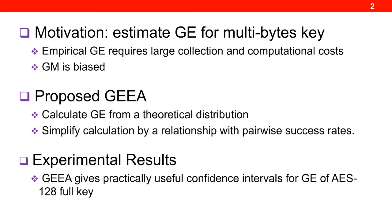Then we explain our new GEA estimator. This estimator is based on the theoretical distribution of score vectors, and we simplify the calculation using a relationship between GE and pairwise success rates. Lastly, we compare GEA with empirical GE on empirical data. We did not compare with GM in the full-key case since it is biased. We will show that GEA gives useful confidence intervals for the GE of a 16-byte AES full-key in practical time.